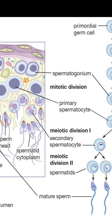Spermatogenesis involves several stages, including the mitotic division of spermatogonia, mitotic division of primary spermatocytes, and differentiation of spermatids into mature spermatozoa.